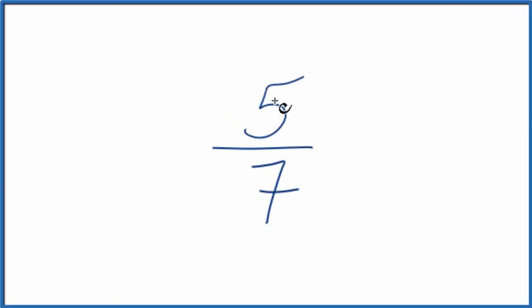Let's convert the fraction 5 sevenths to a decimal. So there's two ways we could do it. First we could just divide 5 by 7 on a calculator.